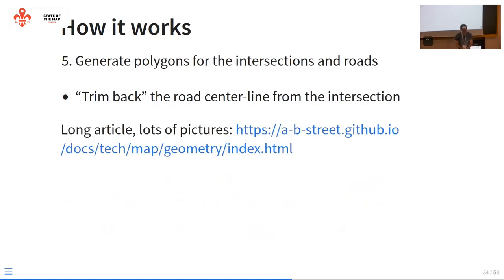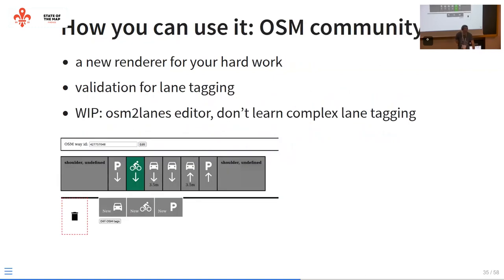The last big piece of the library: once you have that representation of road segments and intersections as center lines and a point, there's a process that figures out the full geometry of the road — how you take a bunch of roads that meet at a single point of an intersection, trim them back, and make the shape for the intersection. A while ago I wrote a long article with a lot of pictures that describes how this works in excruciating detail — feel free to read that.